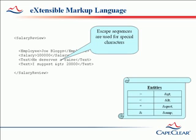An escape sequence using the abbreviation GT can be used. These escape sequences are known as entities. There are four entities defined by XML, as shown here. Such escape sequences can also be used to specify character codes. However, you are unlikely to encounter entities other than the ones shown here.